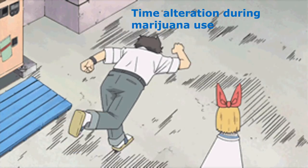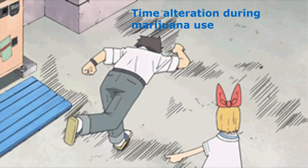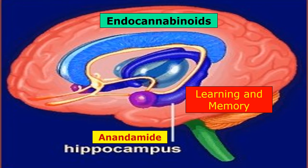One common effect of marijuana is time alteration, in which everything seems to be going at a very slow rate. The effects of marijuana are due to the fact that its active ingredients are very similar in molecular shape to endocannabinoids in our brain. One endocannabinoid found in the hippocampus — the learning and memory center of the brain — is called anandamide. THC, the primary active ingredient in marijuana, activates anandamide receptors, and over a long period of use this can actually damage the receptors in the hippocampus, causing learning and memory problems, especially in young people.